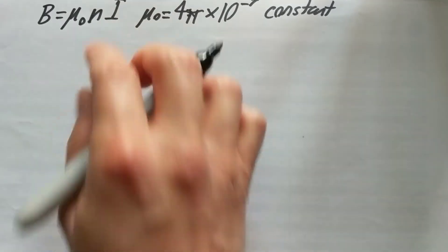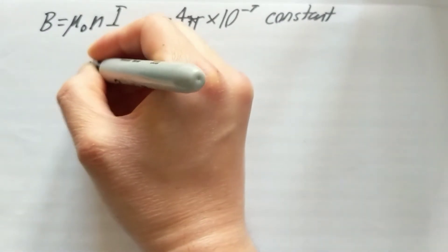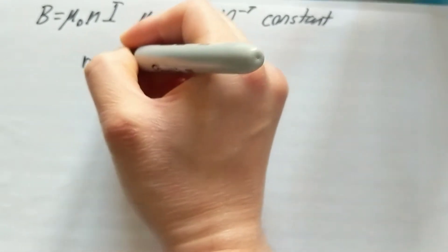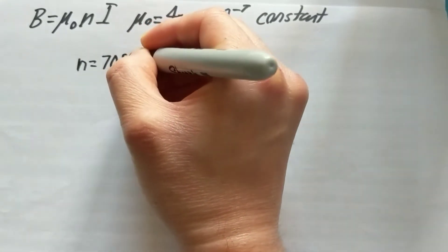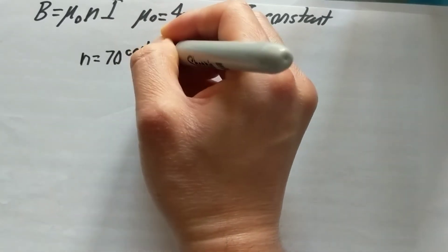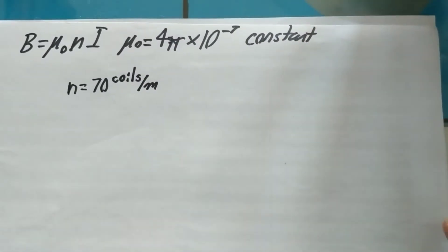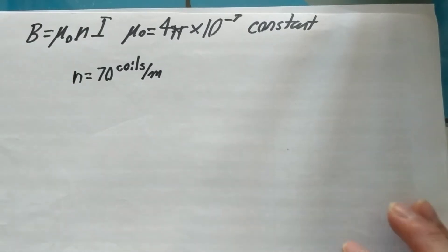So in this problem I give you all three of those values. You notice that our n here is 70 coils per meter. Now do note this value sometimes is kind of a little arbitrary, it's maybe hidden in there, but it will say coils per a certain amount.